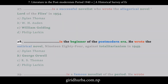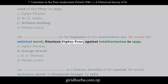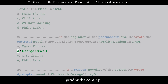Question 28: Who is the beginner of the postmodern era, who wrote the satirical novel 1984 against totalitarianism in 1949? A. Dylan Thomas. B. George Orwell. C. R.S. Thomas. D. Philip Larkin.